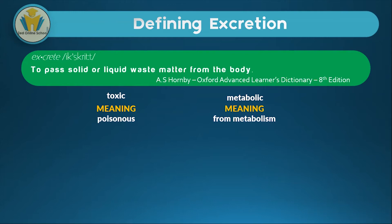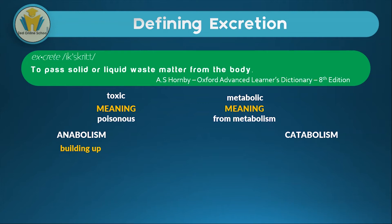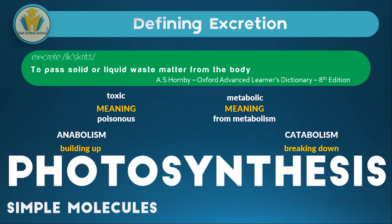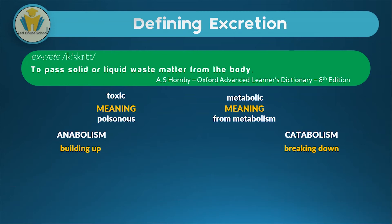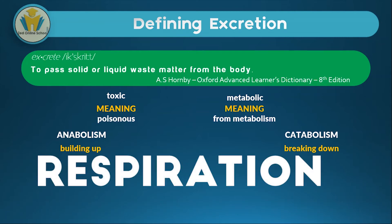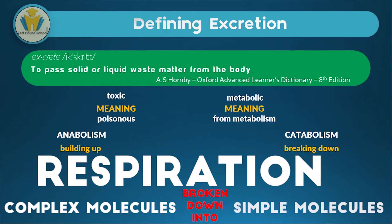For metabolism, we need some explanation. Metabolism is a general word for chemical processes that occur in the body. They are divided into two parts: anabolism and catabolism. Anabolism refers to chemical processes that build up complex substances, while catabolism refers to processes that break down complex molecules. An example of anabolism is photosynthesis, where simple molecules are used to form the complex molecule glucose, while respiration is an example of catabolism, where glucose is broken down into simpler molecules.